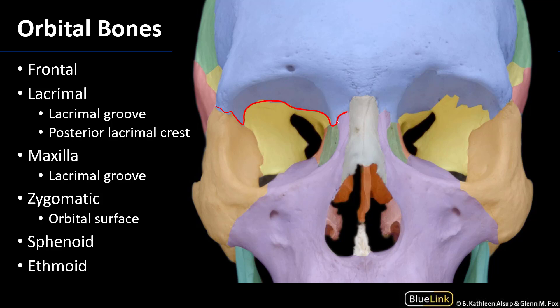Moving inferior from the frontal bone, we have the lacrimal bone. The lacrimal bone gets its name not from the lacrimal gland — because the lacrimal gland is found up in the lacrimal fossa of the frontal bone — but because this is the osseous feature through which tears, or the secretions of the lacrimal gland, are drained through the nasolacrimal duct. Looking at this bone posteriorly, this would be the posterior lacrimal crest, and there's also a slight groove called the lacrimal groove.